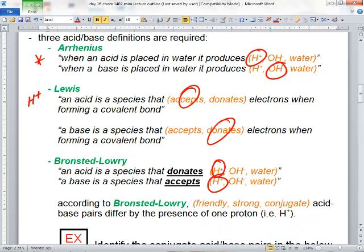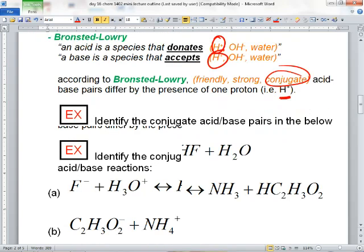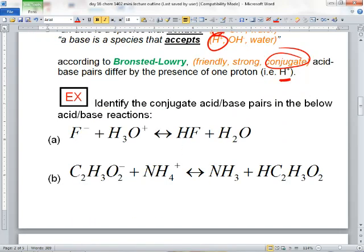But Bronsted-Lowry's got some special terminology with them - conjugate acid-base pairs. They differ only by the presence of an H+. So for example, here's a reaction and these conjugate acid-base pairs - there's always one on one side of the reaction and the other pair's on the opposite side. Do you see two compounds, one on each side, they only differ by an H+?